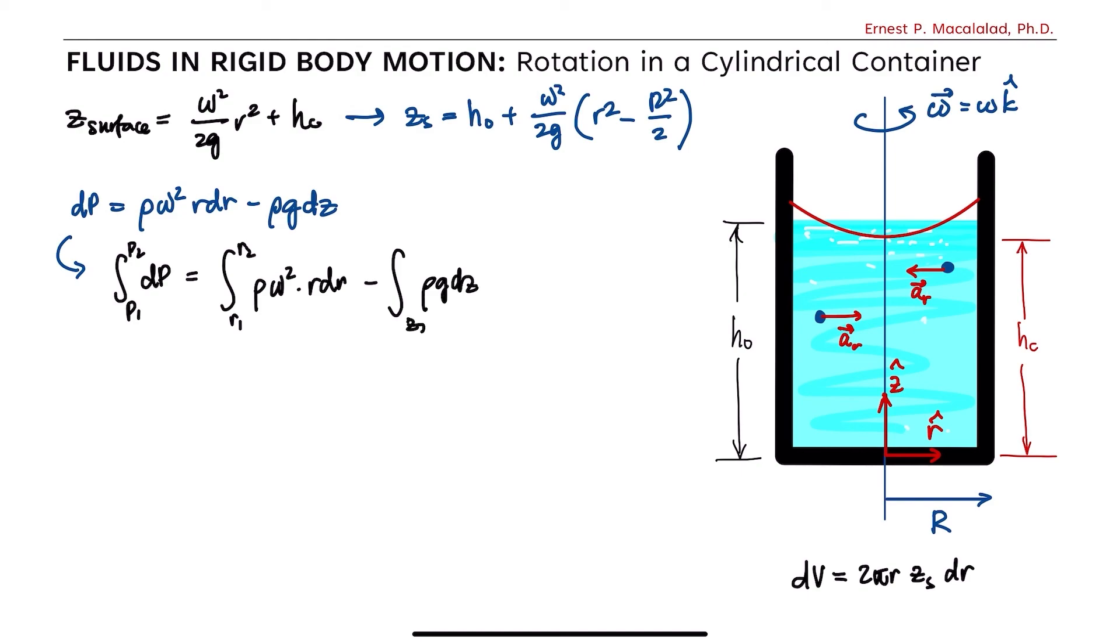Which is simplified as delta p equals p2 minus p1 and this is equal to rho omega squared over 2 times r2 squared minus r1 squared minus rho g times z2 minus z1.